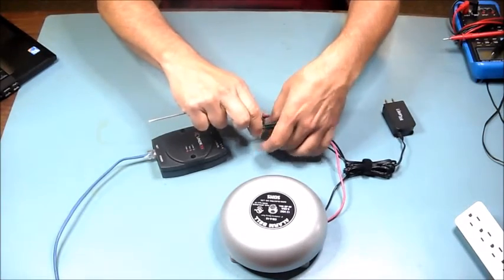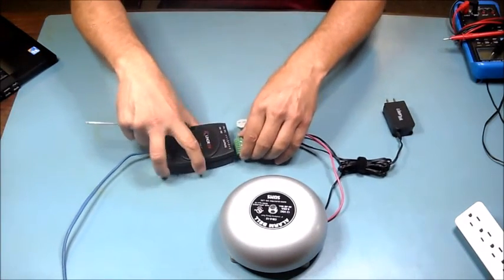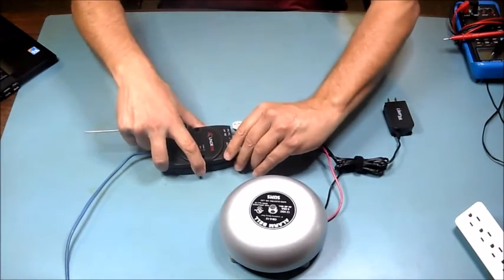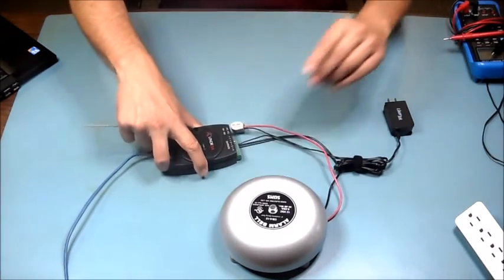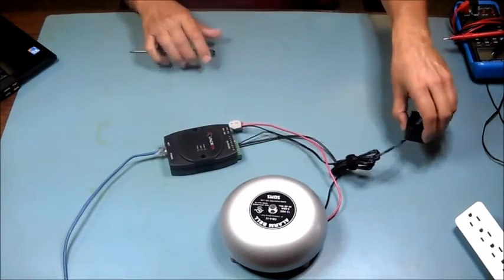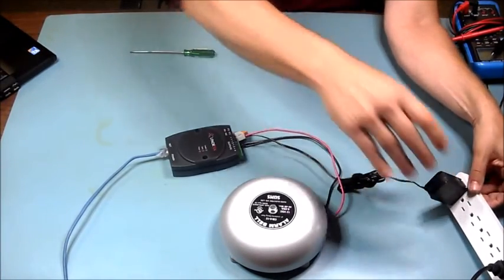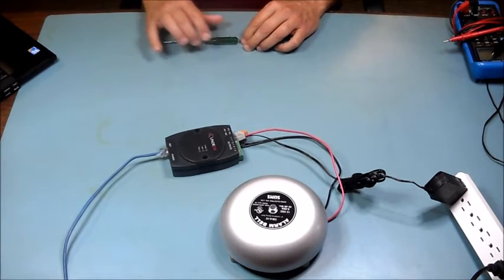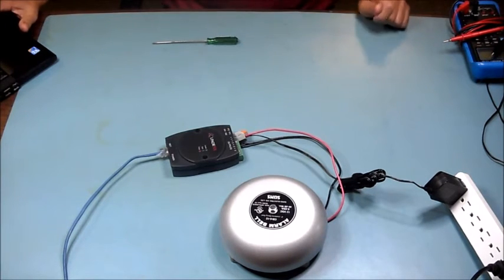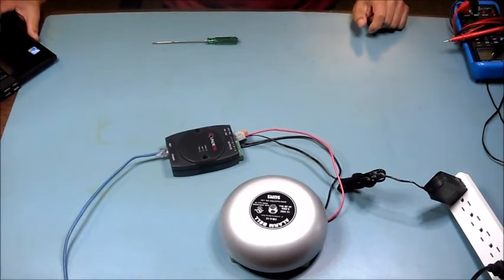Confirm that everything's attached, then plug your connector into the Net Bell and connect your power to the power supply. In other videos, we show you how to set up the relays and the schedule for the Net Bell.